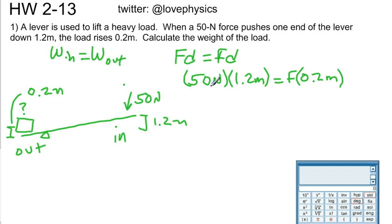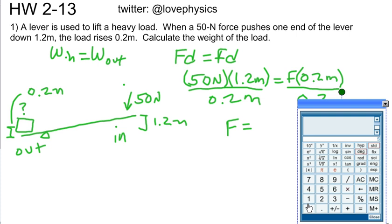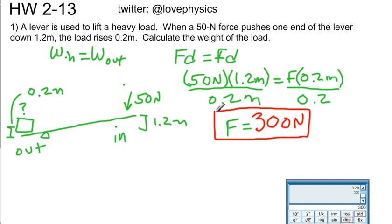So you solve this algebraically, you simply multiply these two together, you divide by 0.2 meters. So you get the force is equal to, let's parse this into the calculator here. So it's 50 times 1.2, that's equal to 60, and then you go ahead and divide that by 0.2. And the answer comes out to be 300. So what you have is this lever is lifting an object that weighs 300 Newtons using only a force of 50 Newtons, that is the mechanical advantage, so the weight of the load is 300 Newtons.